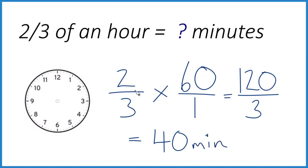So two-thirds of an hour, that is 40 minutes. If we look at our clock here, we could count 5, 10, 15, 20, 25, 30, 35, 40. So this piece right here is two-thirds.